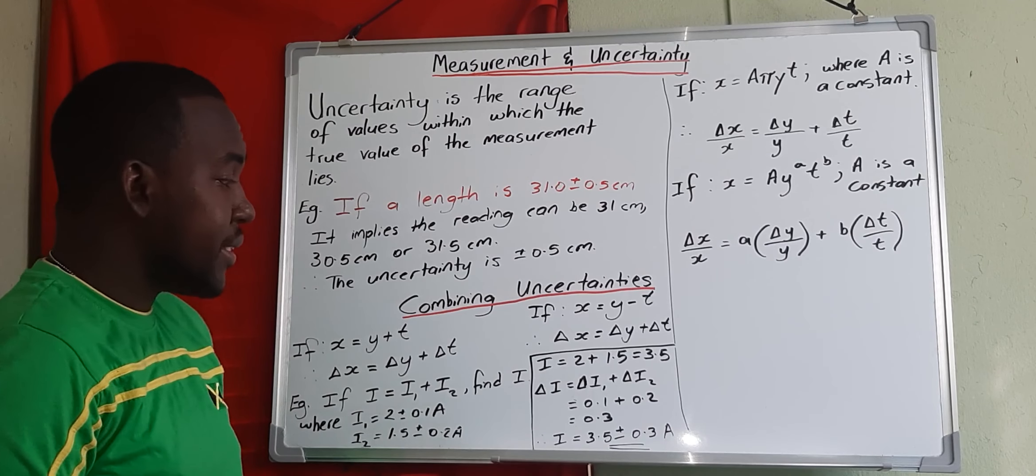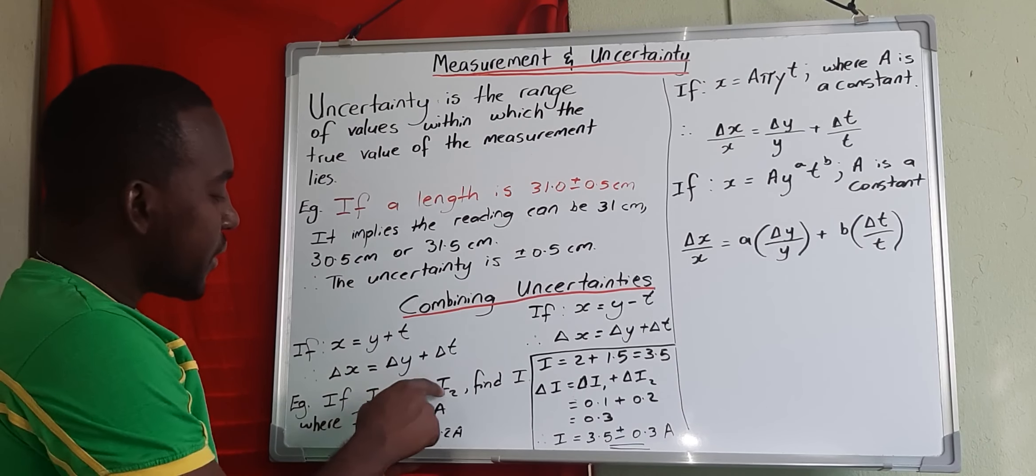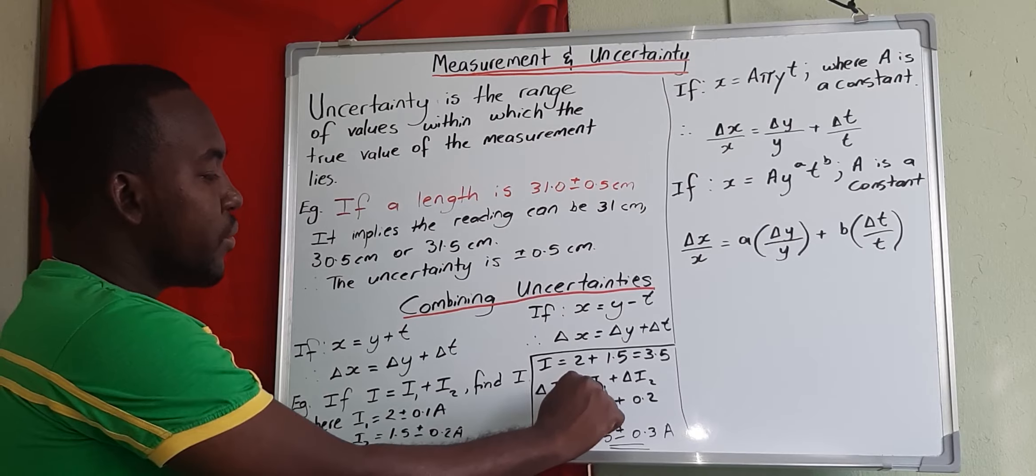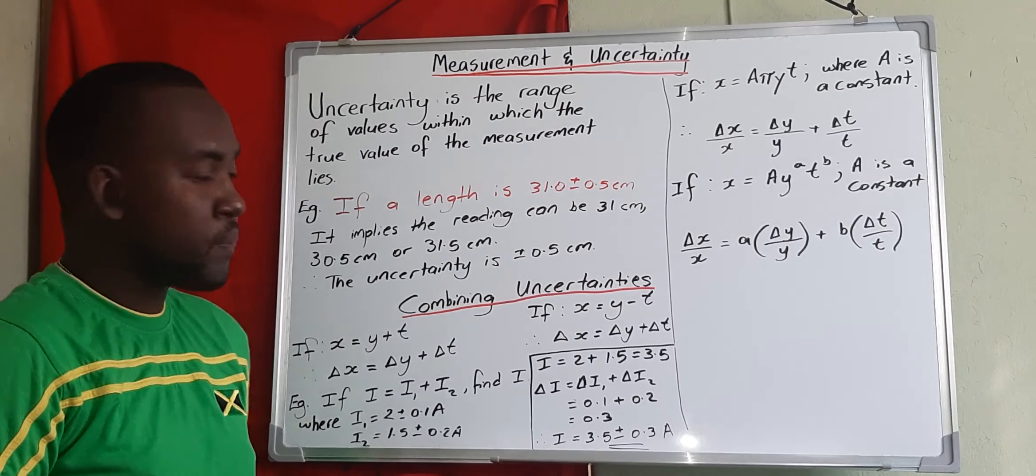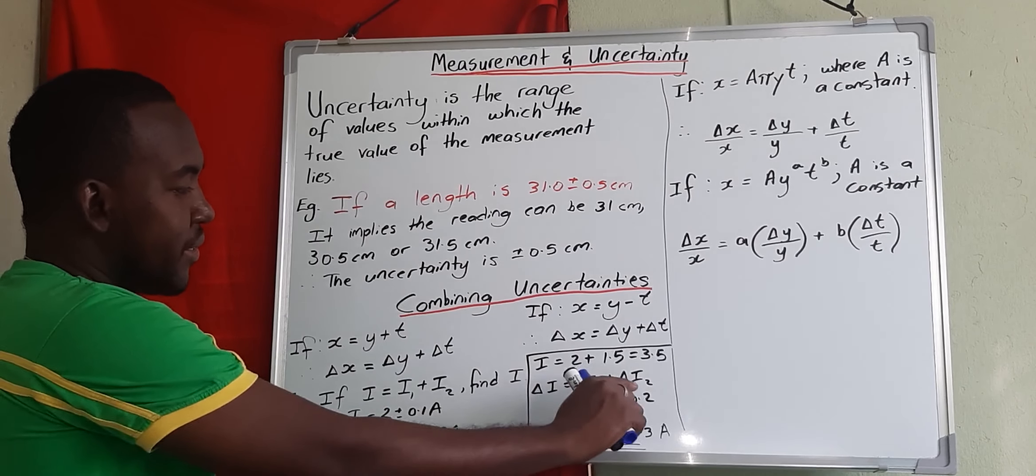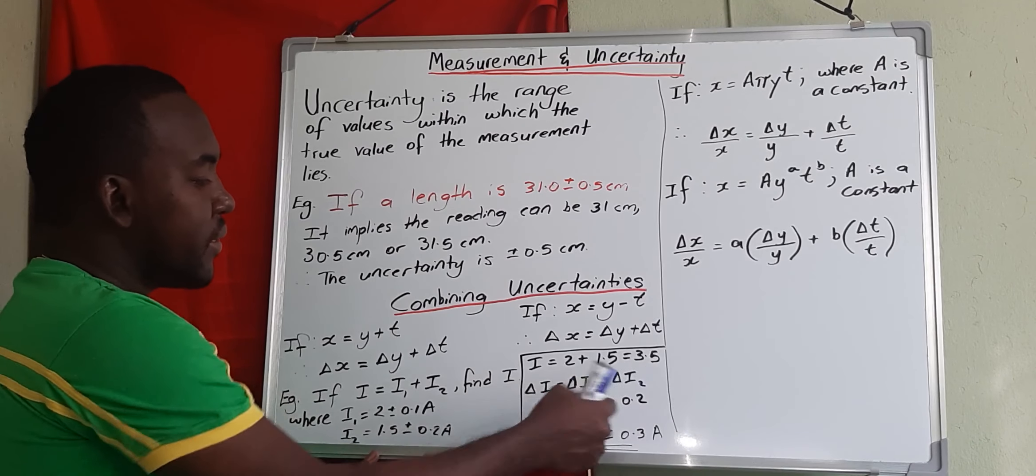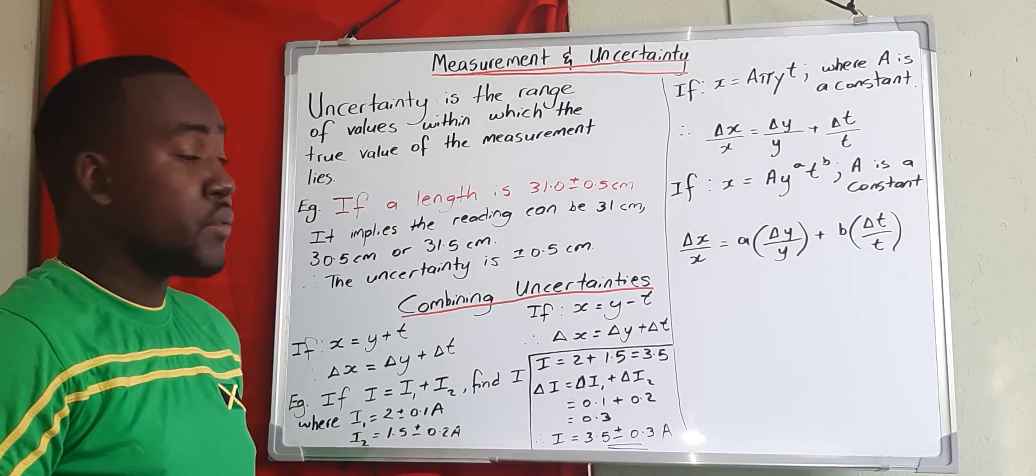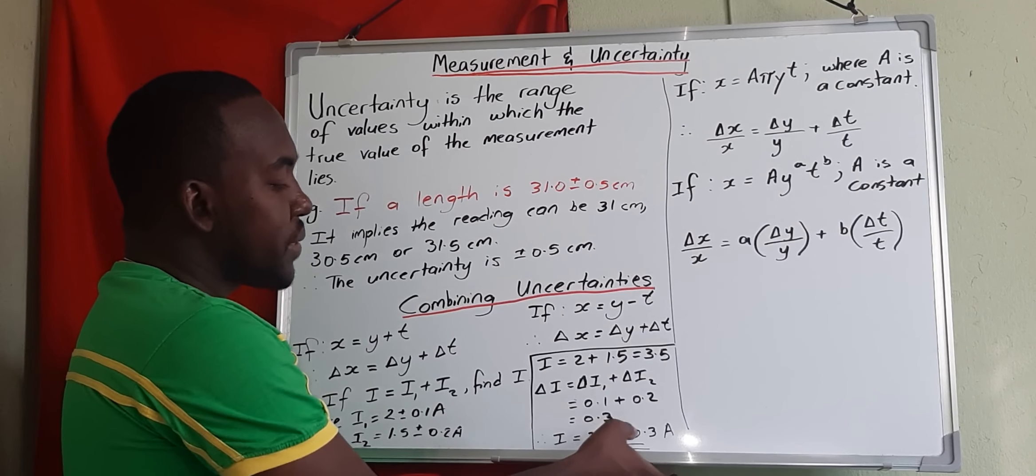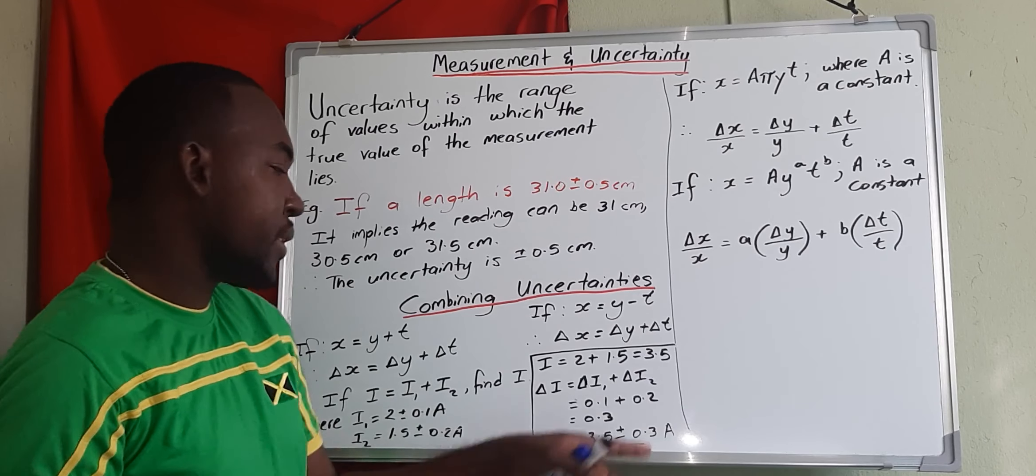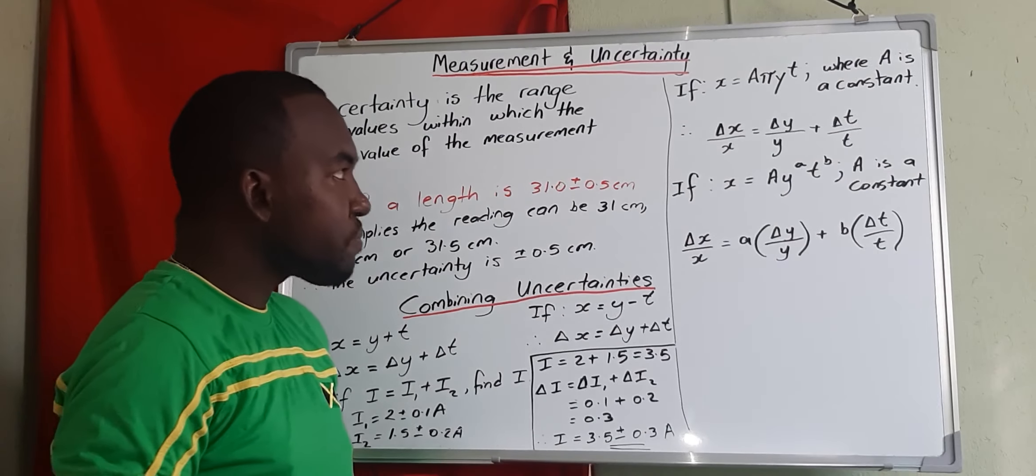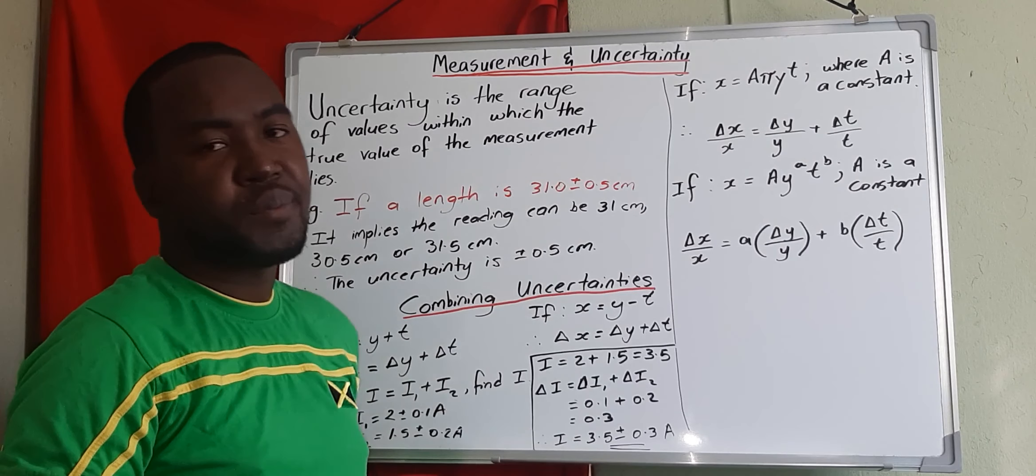Now our uncertainty in i would be, because here is an addition, the uncertainty in i equals uncertainty in i1 plus uncertainty in i2. So uncertainty in i1 is 0.1, uncertainty in i2 is 0.2, and then we get 0.3. So our total answer would be i equals 3.5 plus or minus 0.3 amperes.